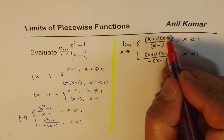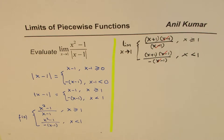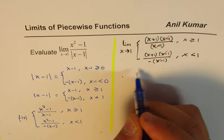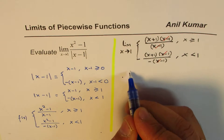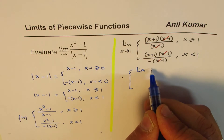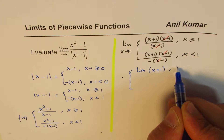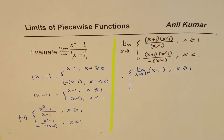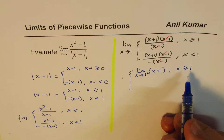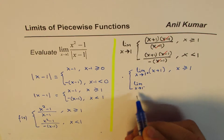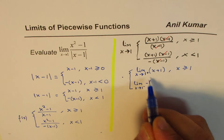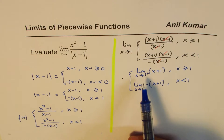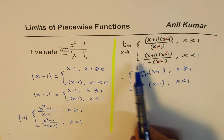At this stage, x minus 1 can cancel out. So we can simplify: the limit becomes the limit of x plus 1 when x approaches 1 from the positive side, since x is greater than or equal to 1. And we can also find the limit as x approaches 1 from the negative side, which is the limit of minus x plus 1. We find the limit of this function approaching from both the positive and negative sides.